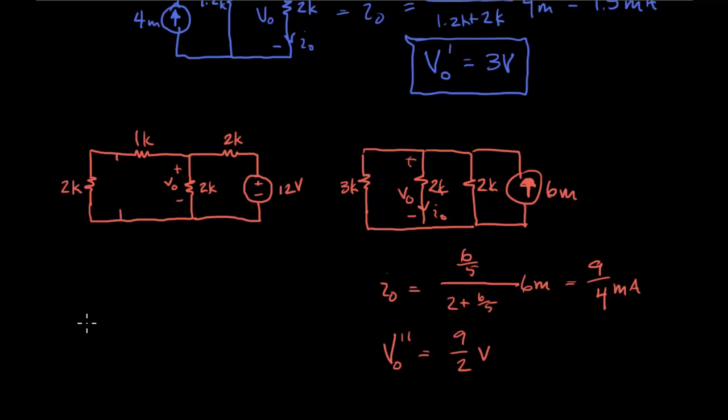And so finally, now we bring the idea of superposition together. And we find that V0 is equal to V prime plus V double prime. And that equals 7.5 volts.